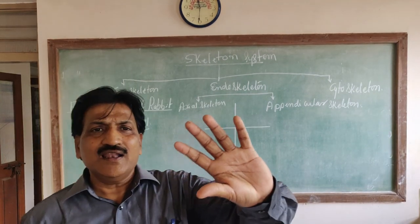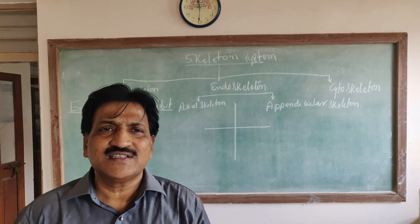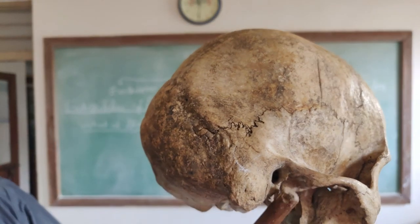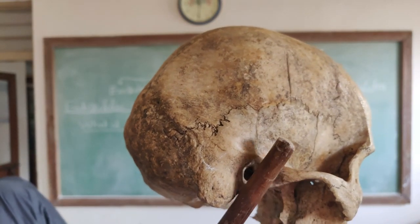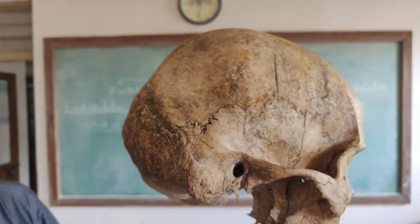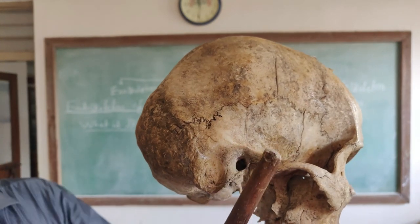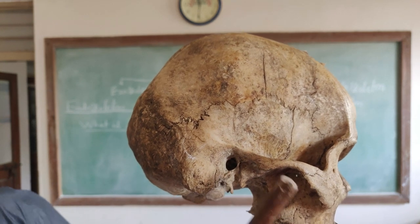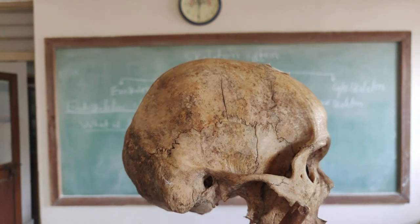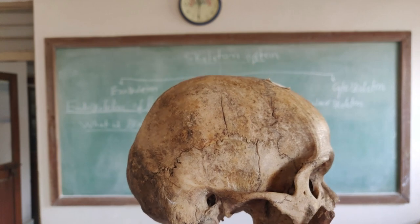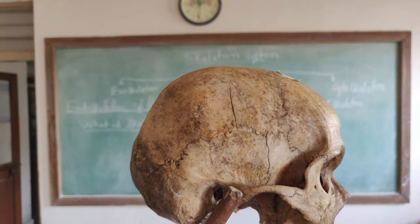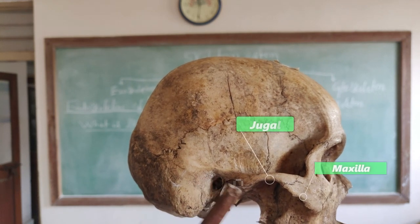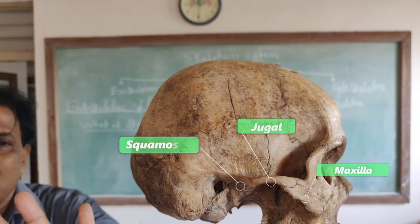The next important character of the skull of rabbit — as in human beings — is the presence of the zygomatic arch. The zygomatic arch is made up of three bones: the maxilla, jugal, and sphenoid. These three bones form the zygomatic arch.